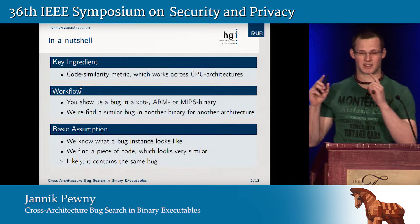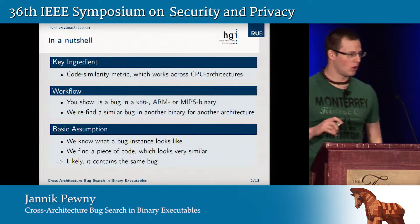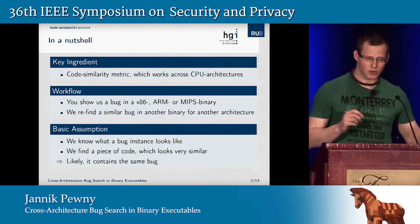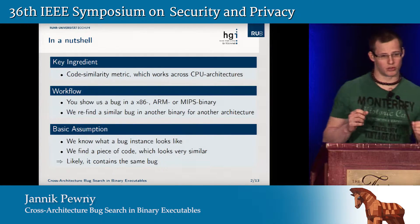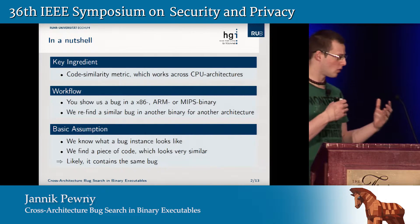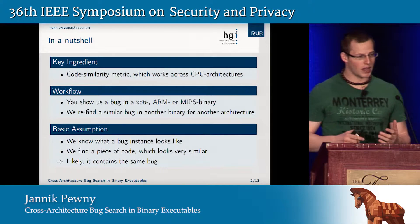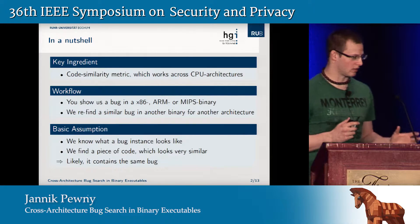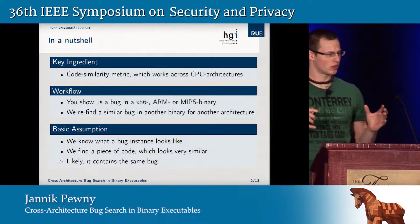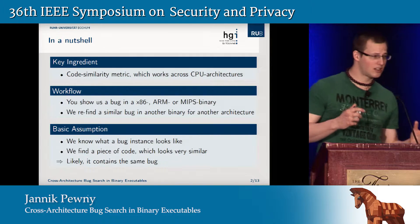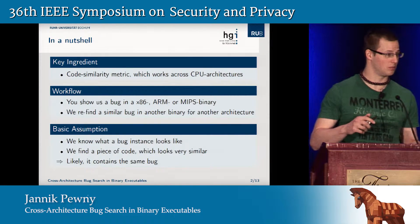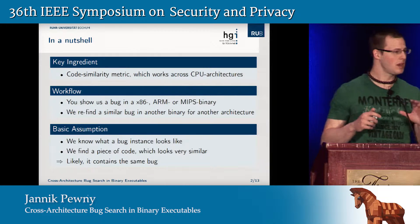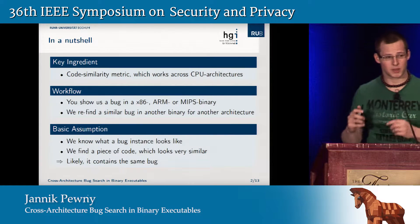The basic workflow is: you show us a binary in either x86 or MIPS or ARM, unobfuscated. You pinpoint us to the exact bug location, then you give us another binary, and we will try to re-find the same or very similar bug in that binary, which may be compiled for another architecture. The basic assumption is that we know what a specific bug instance looks like, try to find a piece of code which looks similar, and it is likely to contain the same bug. The reason is that programmers are lazy — they copy and paste code, and that means they also copy and paste bugs, sometimes adapting them slightly, which is why we find not only the same bugs but actually sometimes similar bugs.